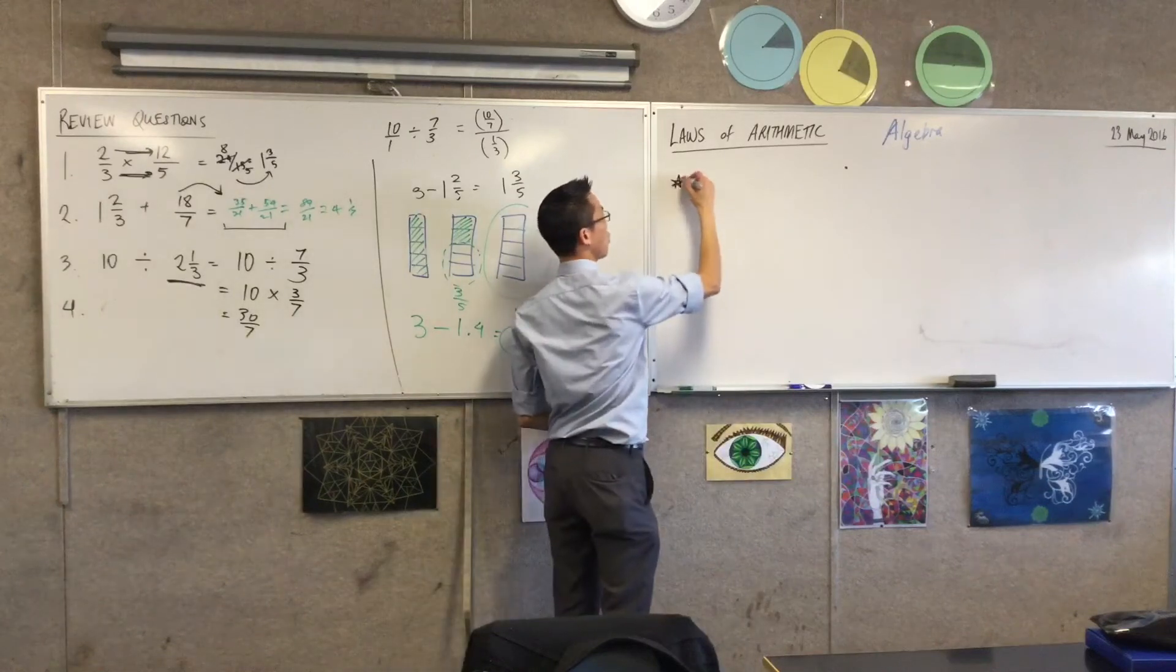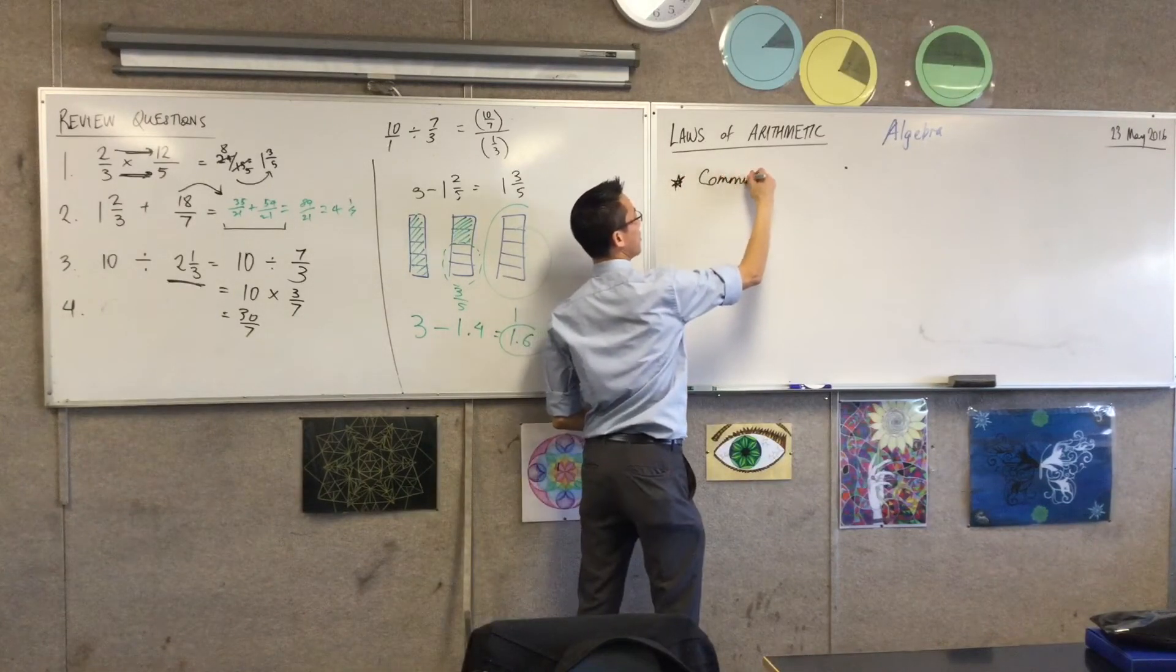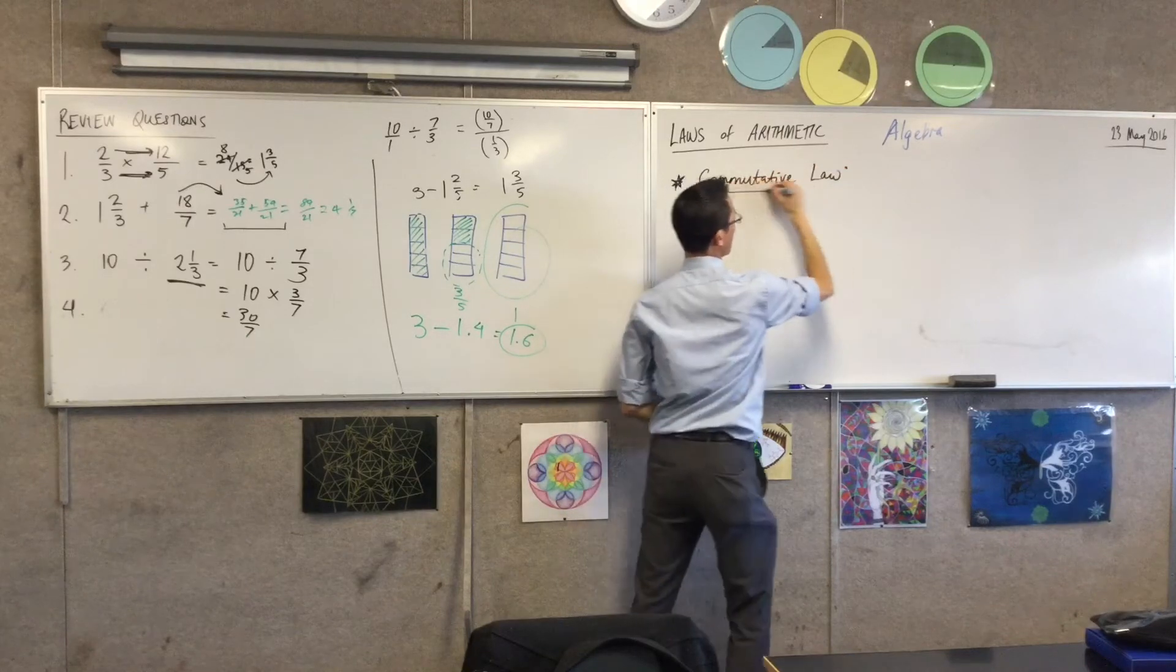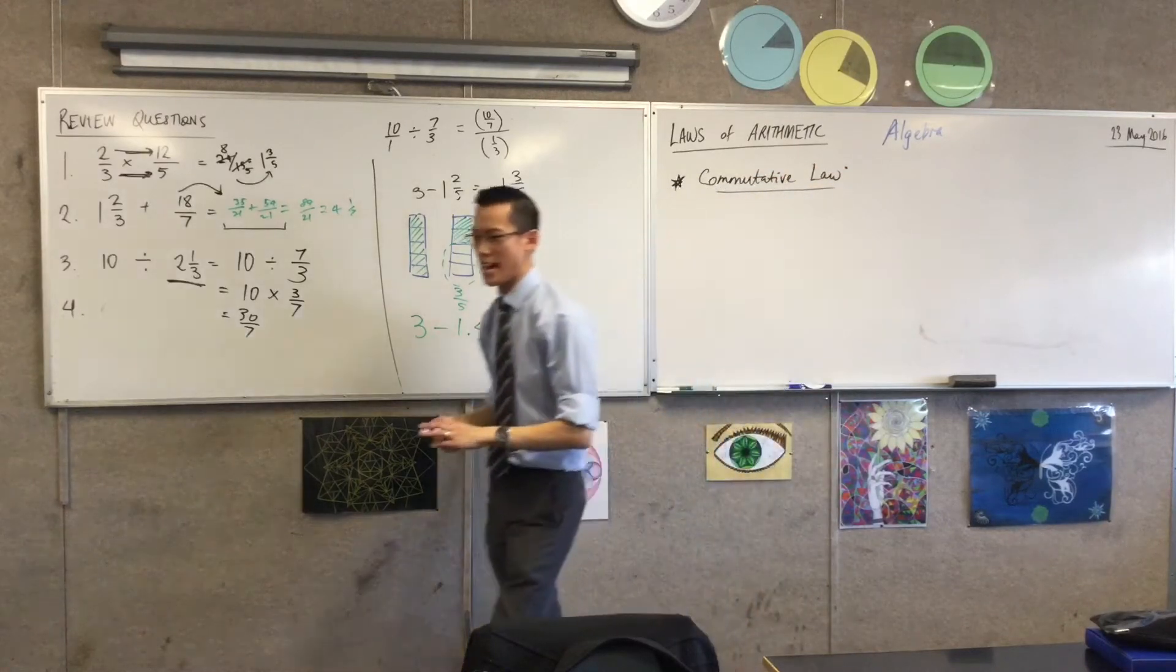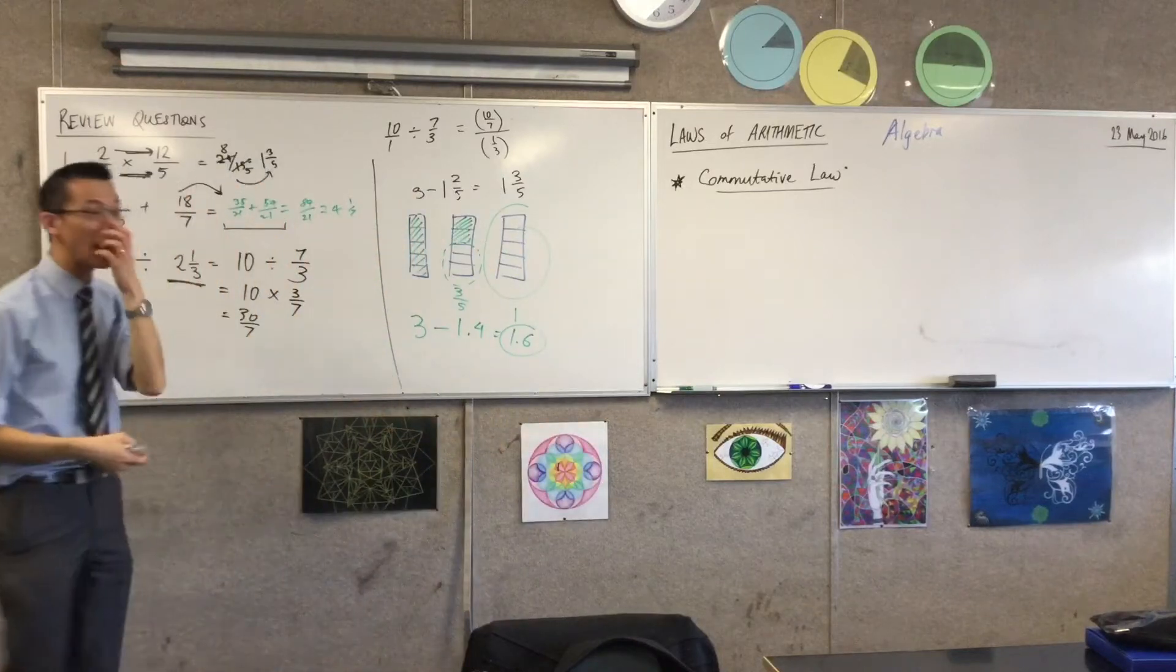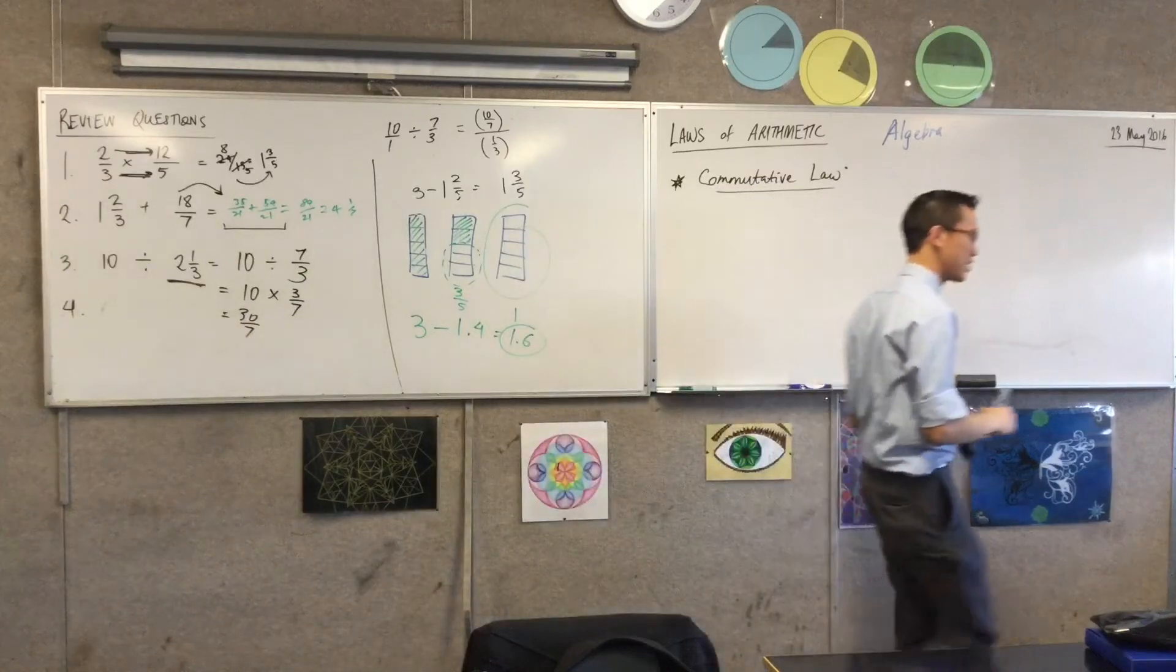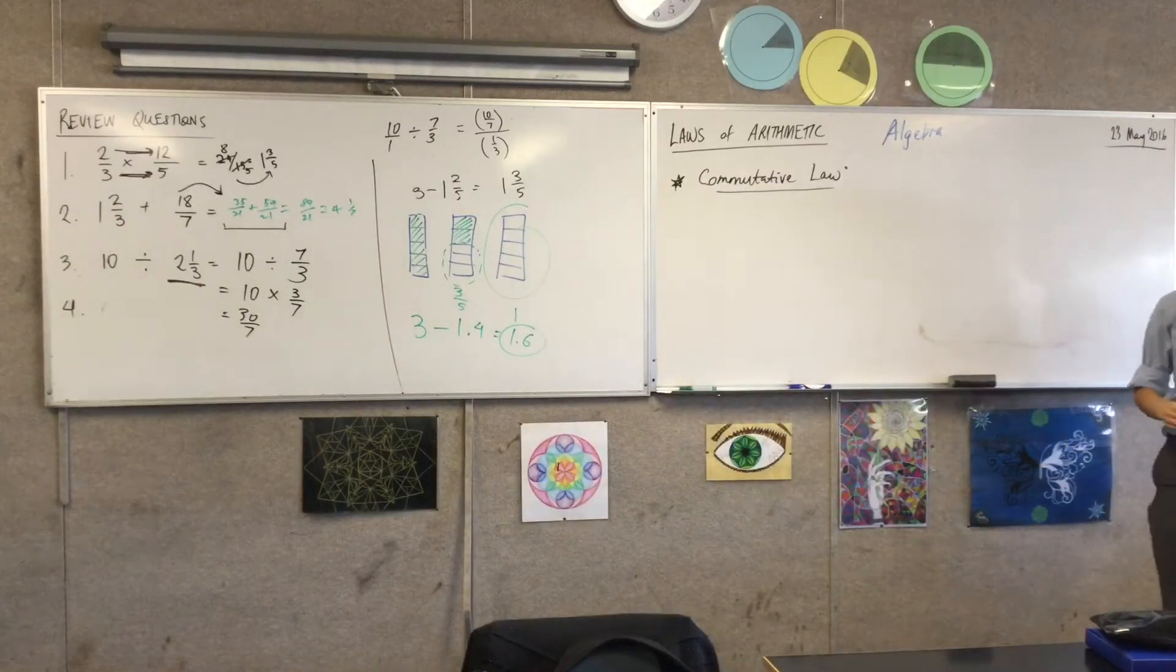The first law is called the commutative law, and it's got a big scary name, but it's actually a really simple idea. If you've got some colored pens or pencils or textures, then we're going to illustrate this very simply.